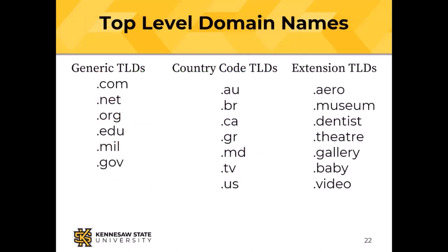We started with generic top-level domain names — 'generic' means they describe the type of organization. So .com for commercial, .net used to be reserved only for operation of the network but is now open to everyone, .org for nonprofits, .edu for degree-granting institutions, .mil for the military, .gov, and so on. As the internet expanded outside the United States, country-code top-level domains were added: .au for Australia, .br for Brazil, and so on.